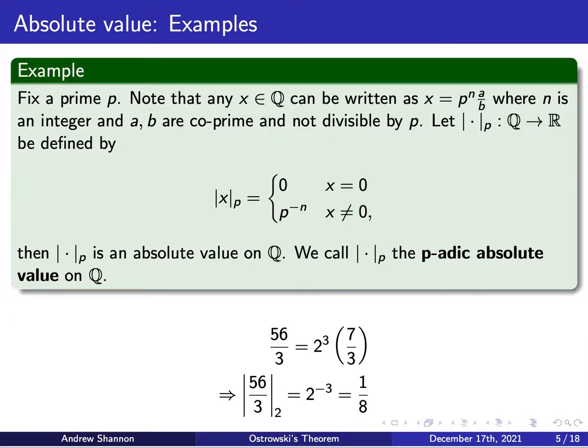If we fix a prime p, then we can write any rational number as x equals p to the n times a over b, where n is some integer and a and b are co-prime integers not divisible by p. Then consider the function double bar sub p from the rationals to the reals, defined by double bar sub p of x equals 0 if x is 0, and p to the negative n otherwise. Then double bar sub p is an absolute value on the rationals, and we call it the p-adic absolute value. For example, for the rational number 56 thirds, we can write it as 2 cubed times 7 over 3, where 7 and 3 are co-prime and neither is divisible by 2. So the 2-adic absolute value of 56 thirds is 2 to the negative 3, in other words 1 over 8.